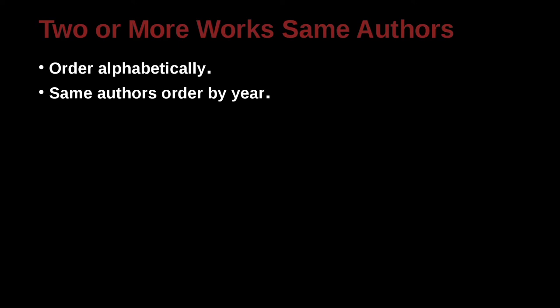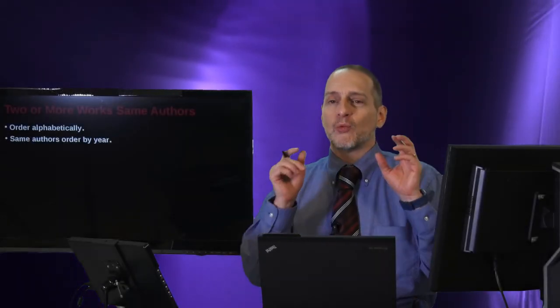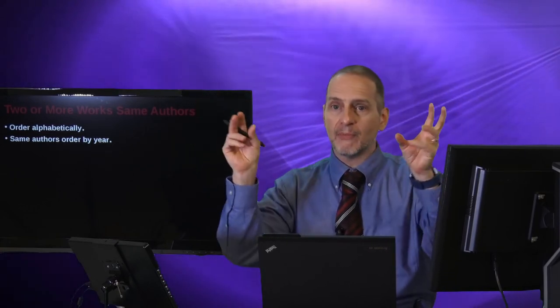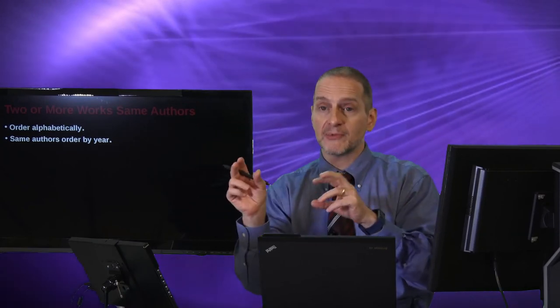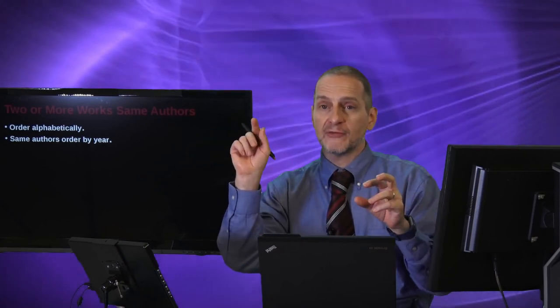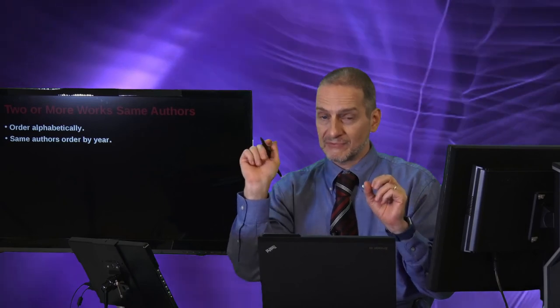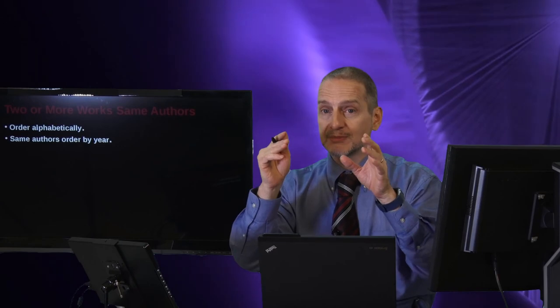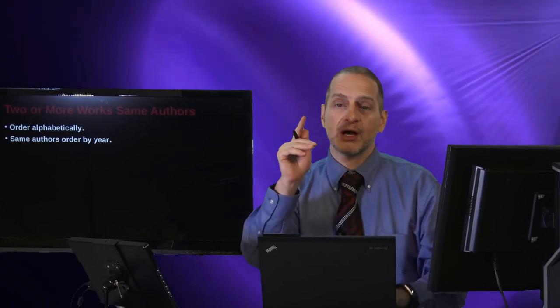What happens when you have two citations together? You need to put them in order. That order is alphabetical order, using the first author's name. What if you have the same author but different papers from different years? You order them by year, by the date. These are two different cases: multiple different authors goes alphabetical, and one author with many papers from different years goes in date order.